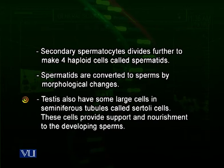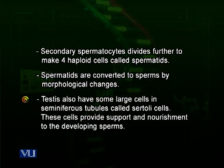The testis also contains large cells called Sertoli cells. These Sertoli cells nourish the developing sperms and their developing stages, and provide surface and protection to them in the seminiferous tubules. When the sperms become mature, they are released into the lumen of the seminiferous tubules and move towards the vas deferens.